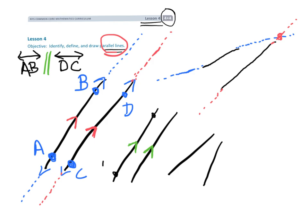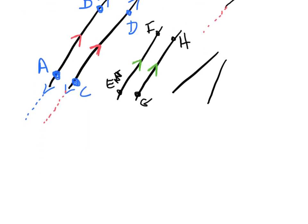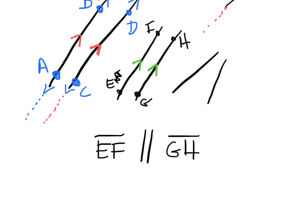Let's do another one. If this is line EF and this is line GH, and I want to show that EF is parallel to GH, I would write EF with a line segment bar, the parallel symbol, then GH with a line segment bar — no arrows, because these are segments. So I'm showing that line segment EF is parallel to line segment GH. And that's what the little arrows on the figure also show — that these two lines are supposed to be parallel.